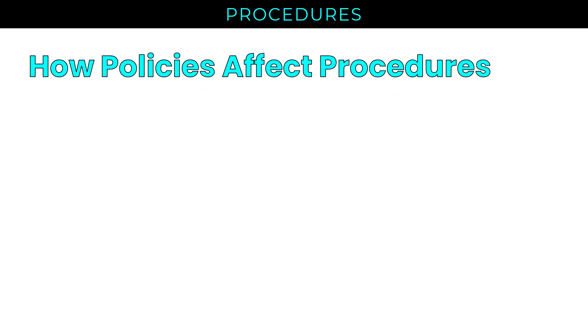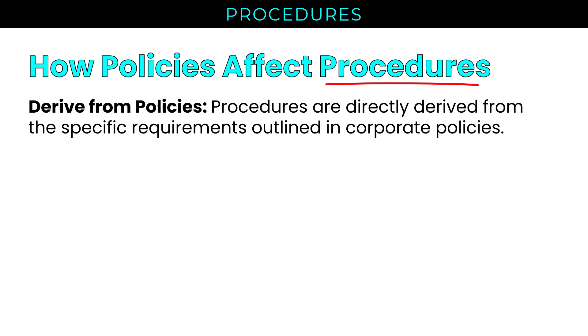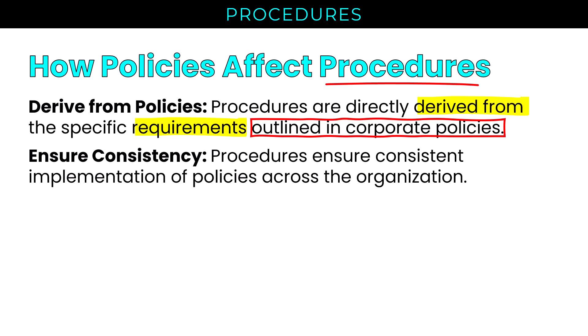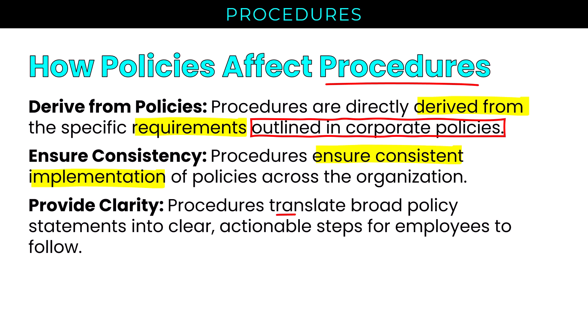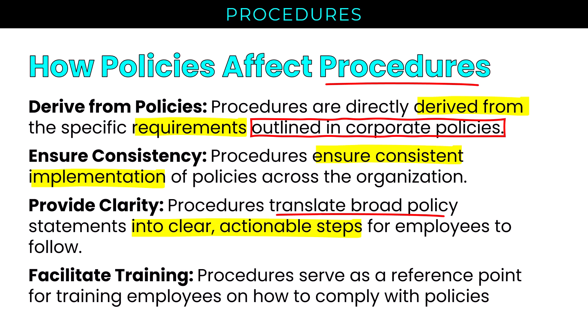Let's talk about how policies affect procedures and the relationship between the two. Procedures are directly derived from the specific requirements outlined in corporate policies. Procedures ensure consistent implementation of policies across the organization. They provide clarity — translating broad policy statements into clear, actionable steps for employees to follow, whether those are folks in IT and security or end users. And they facilitate training, serving as a reference point for training employees on how to comply with policies.